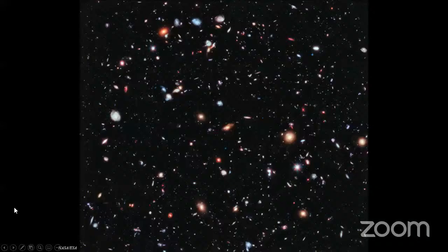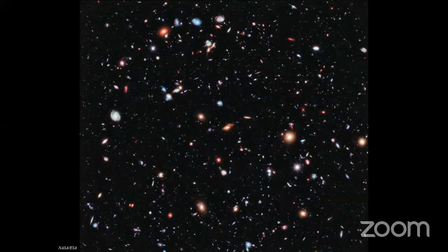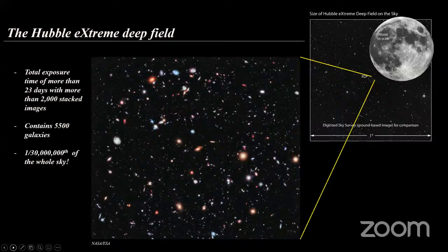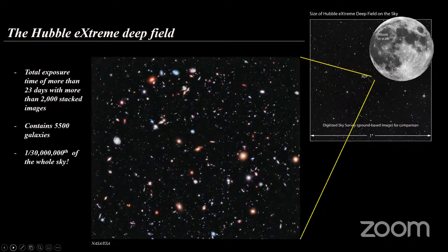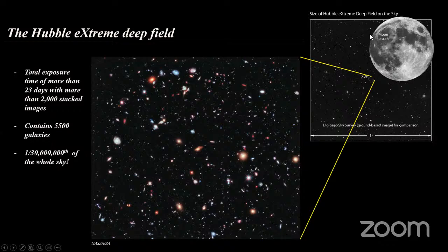We're going to start with a picture — a picture is worth a thousand words, as they say. This is called the Hubble Extreme Deep Field. It basically contains 5,500 galaxies. Every dot that you see in this picture is an entire galaxy. It is an exposure time of more than 23 days from the Hubble Space Telescope orbiting the Earth, and more than 2,000 stacked images — comparing the size of the extreme deep field to the moon. And this is only 1/130 millionth of the whole sky.